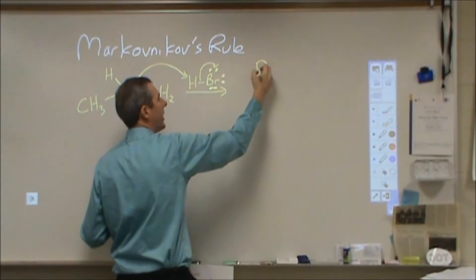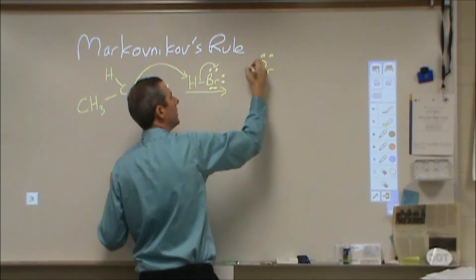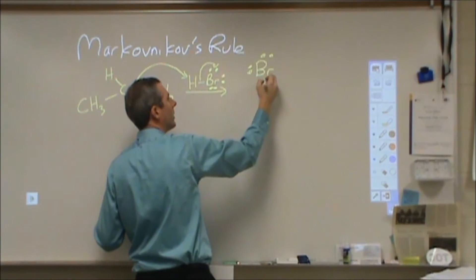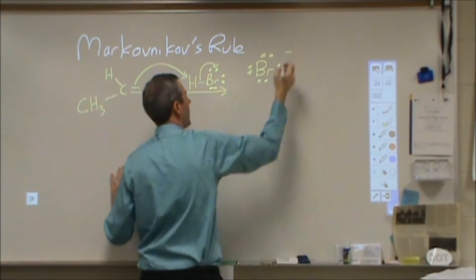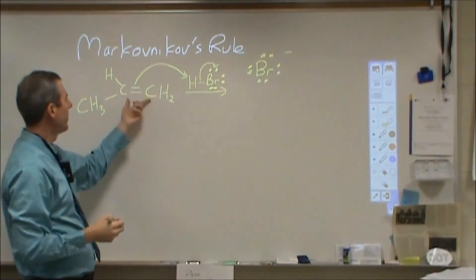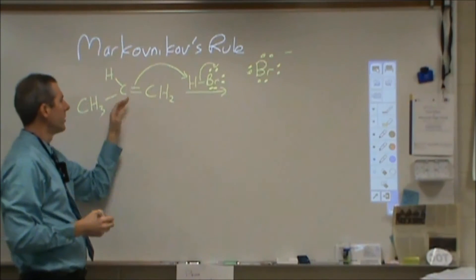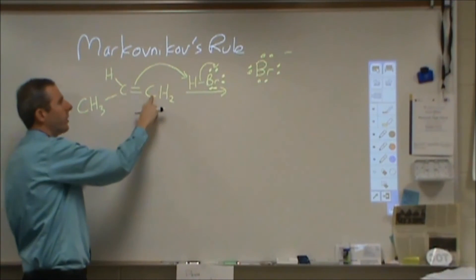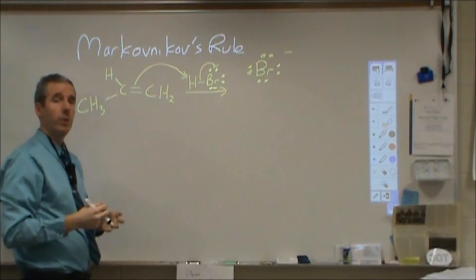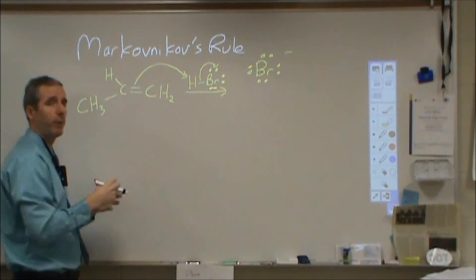We end up with a bromide ion with a negative charge, and a hydrogen on only one of the two carbons. The hydrogen could go to this carbon or this carbon. The other one will be a carbocation—a positively charged carbon because it only has three bonds.